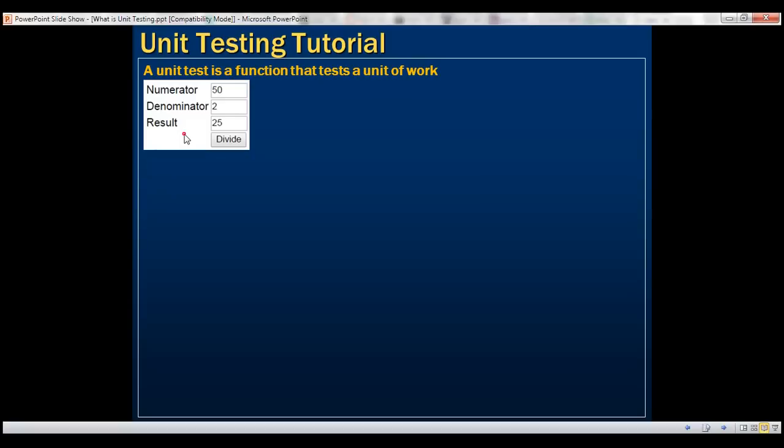To achieve something like this, we might have a divide function like this. Notice this divide function has two input parameters, both of type integer: numerator and denominator. This function is also returning an integer, the quotient value. And if you look at the implementation, this is very straightforward. We are dividing the numerator by denominator. Whatever quotient value we get, we're storing that in this result variable, and finally the function is returning that result.